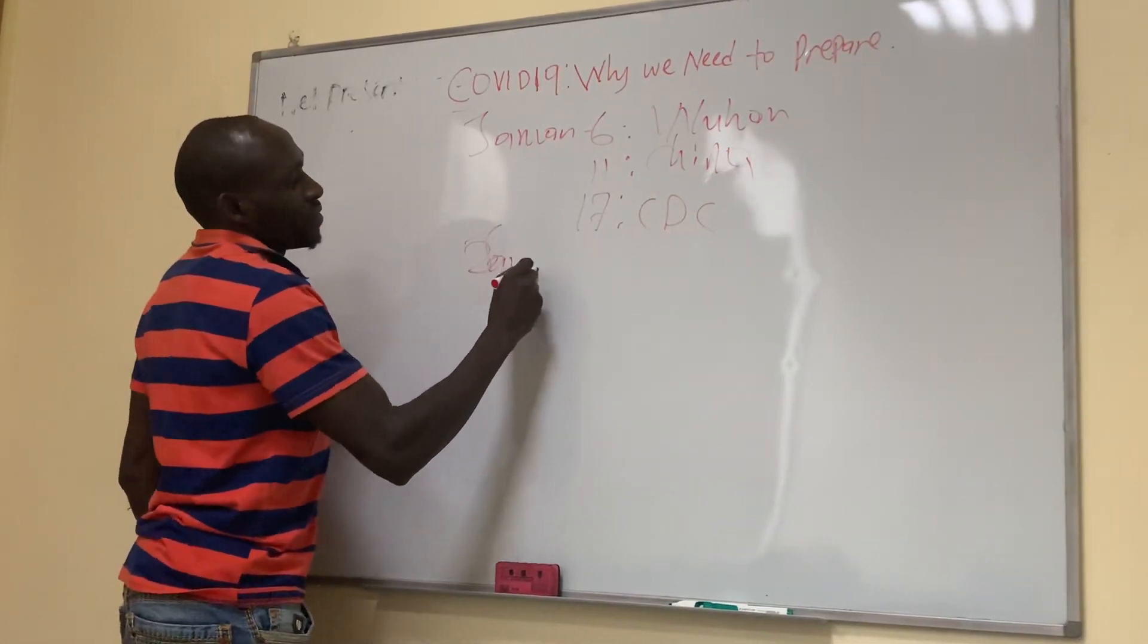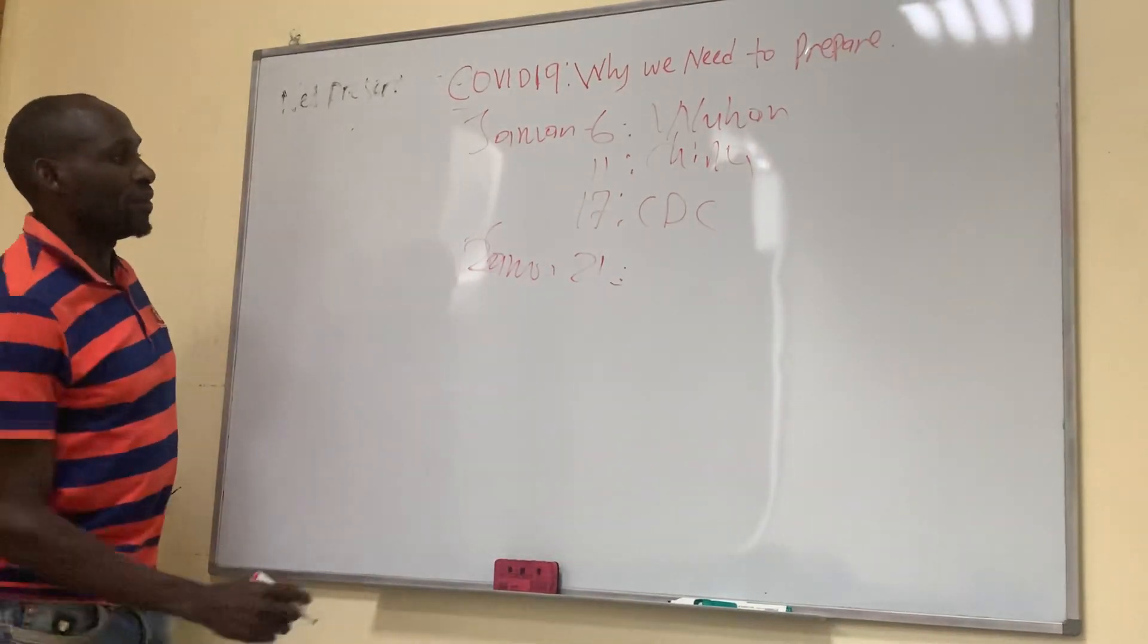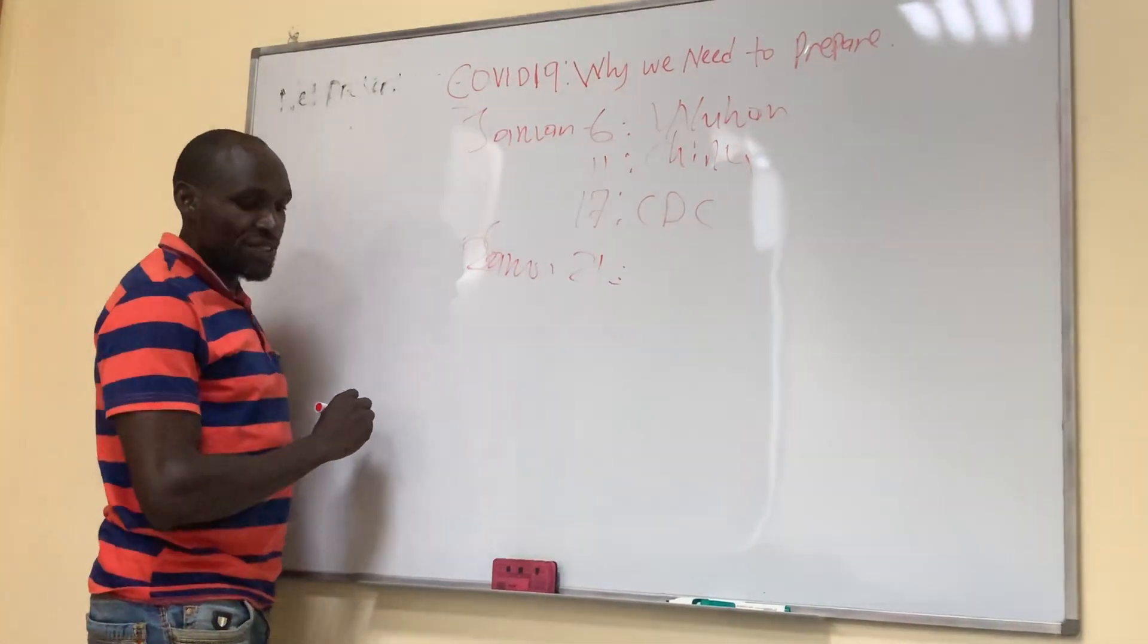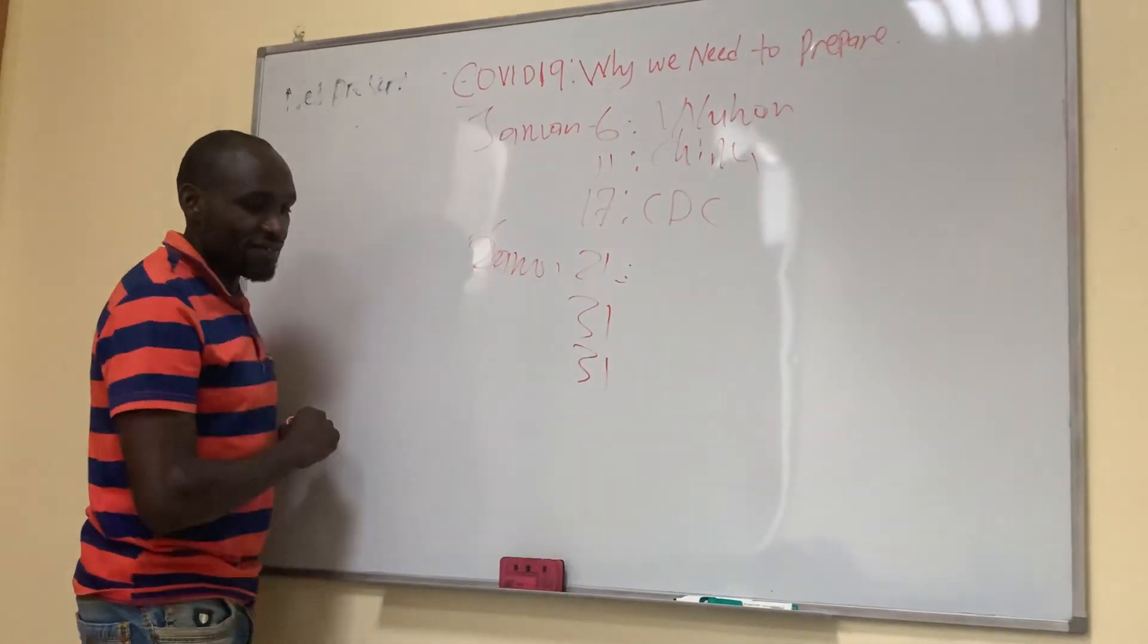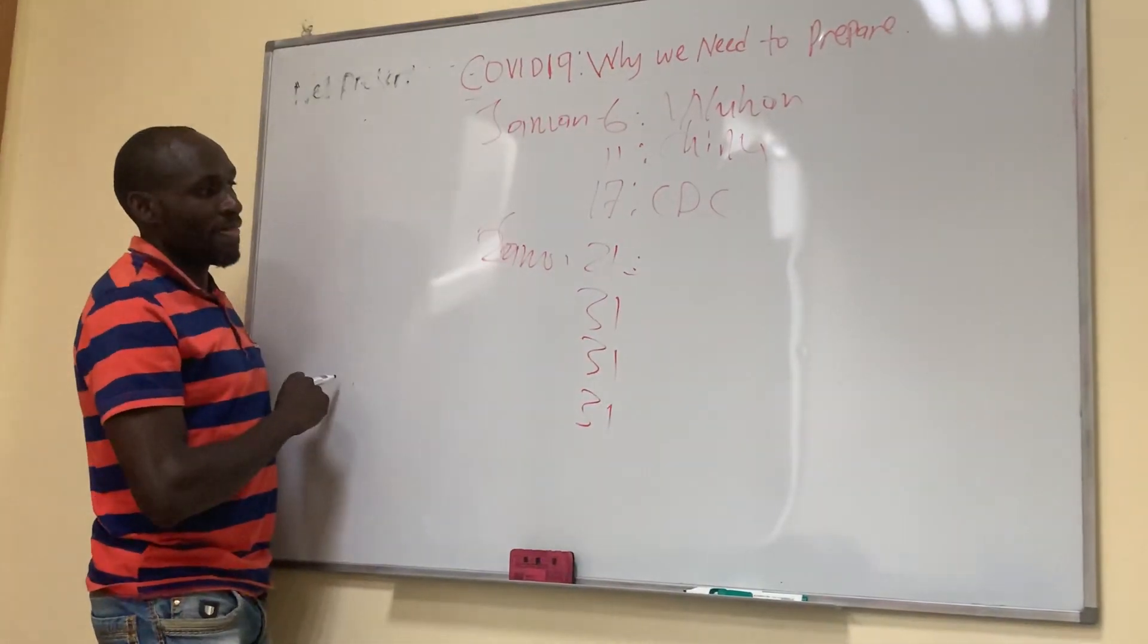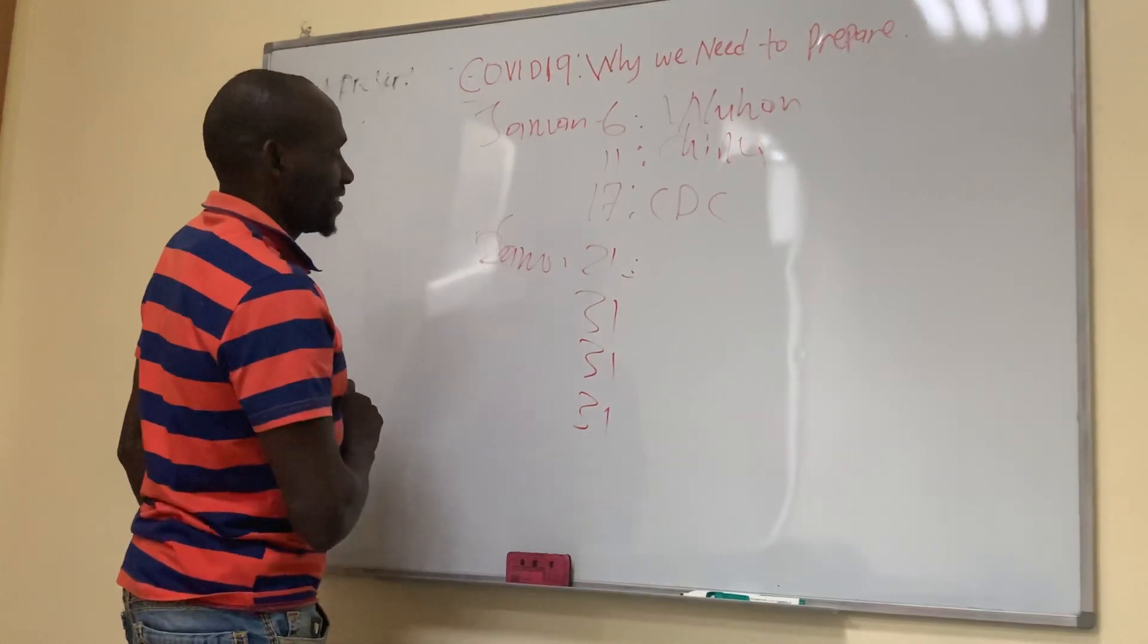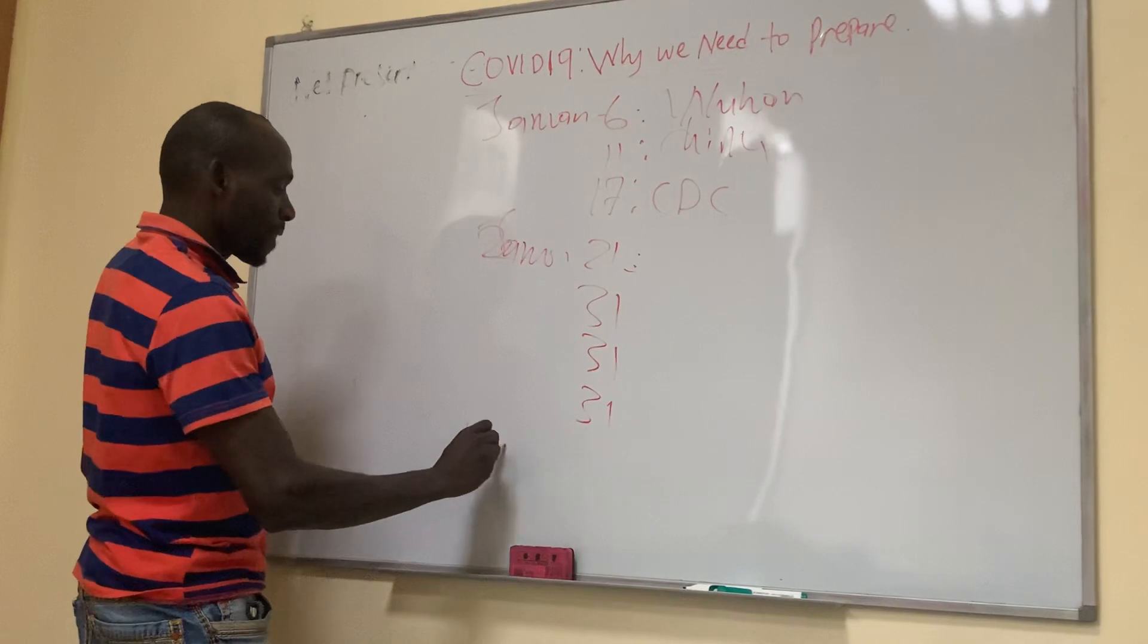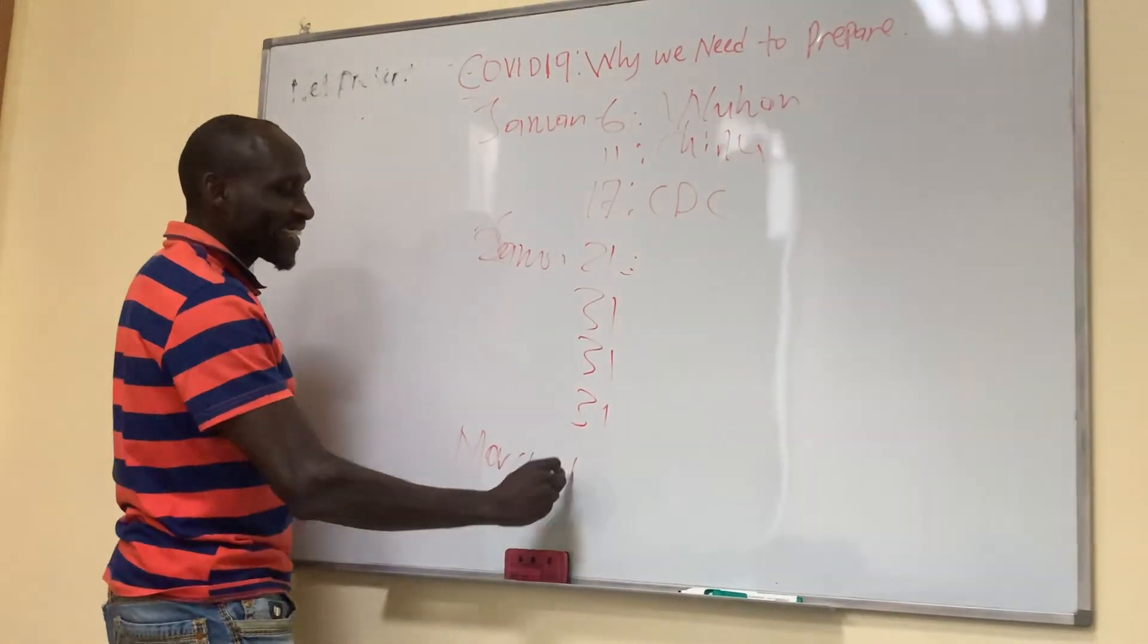Now, the first case in Italy was January 31st. Spain, January 31st. UK, January 31st. So these are first cases. In Kenya, the first case was March 13th.